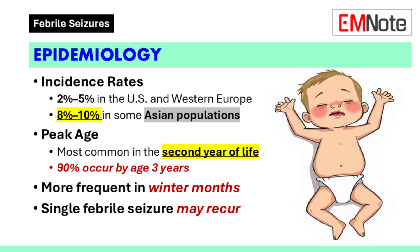The incidence of febrile seizures in the United States and Western Europe is estimated to be between 2% and 5%. Some Asian populations show a higher incidence of 8% to 10%. The peak incidence of a first febrile seizure is in the second year of life, and approximately 90% of children experience their first febrile seizure by the age of 3 years. Febrile seizures occur most often in the winter months, and recurrence of a single febrile seizure is a risk.